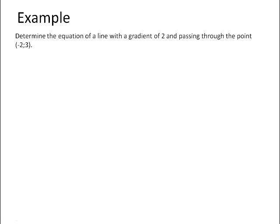Determine the equation of a line with a gradient of 2 and passing through the point (-2, 3). So if we start off with our standard form of a straight line graph equation, we already know that the gradient of the graph is 2, so we can replace the m with 2.